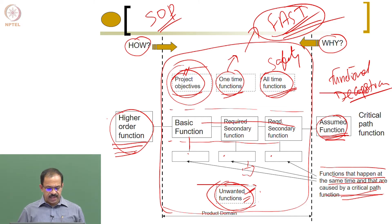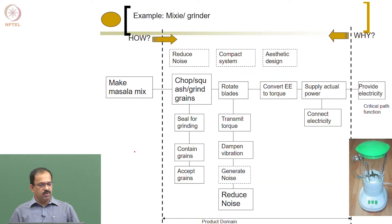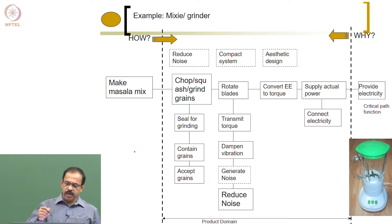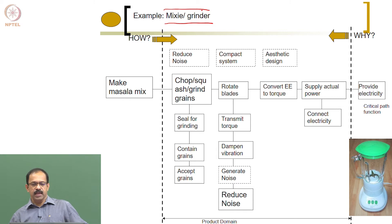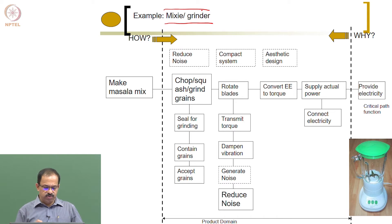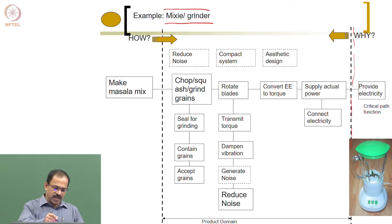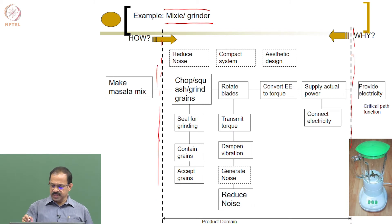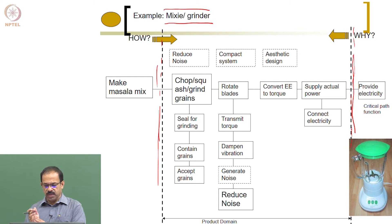Let us take an example: a mixer or grinder — whether it is a wet mixer, dry grinder, or wet grinder. We draw two dotted boundary lines. Anything within these two lines represents the functions of the product. We also note a project objective: the product should have reduced noise.